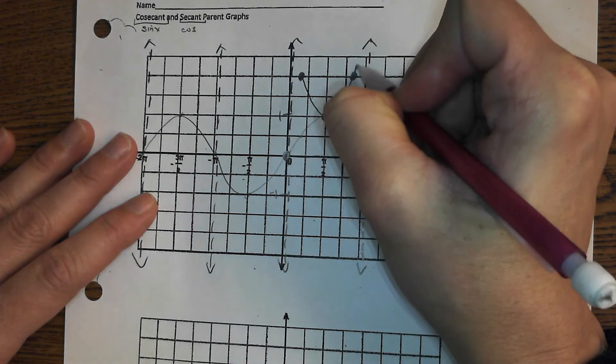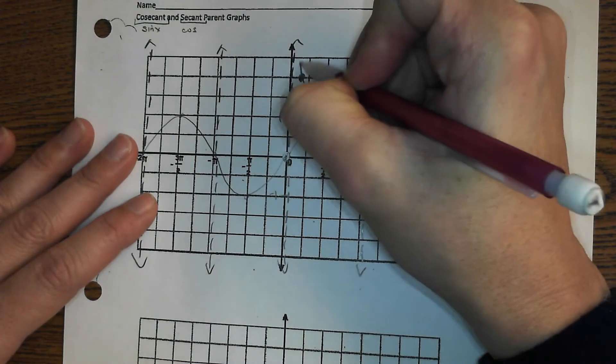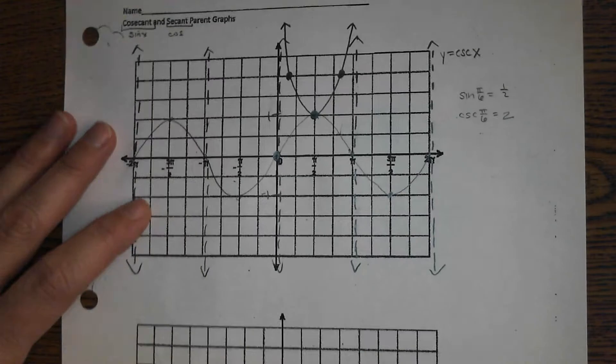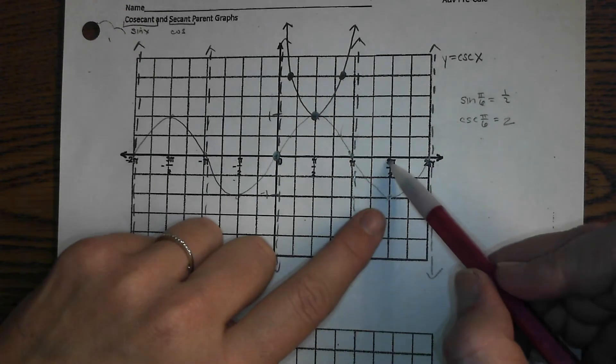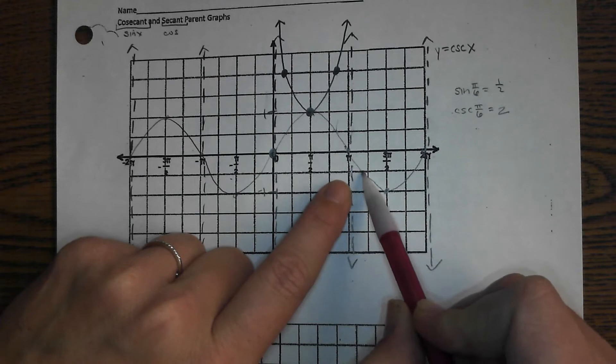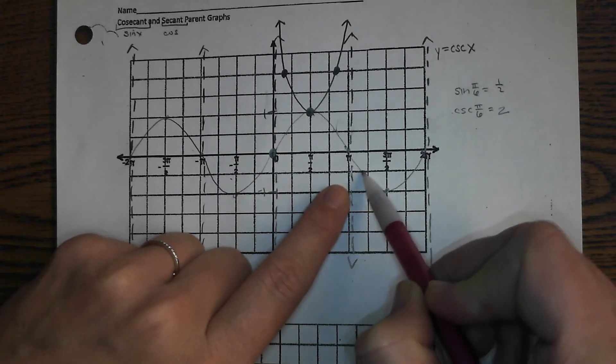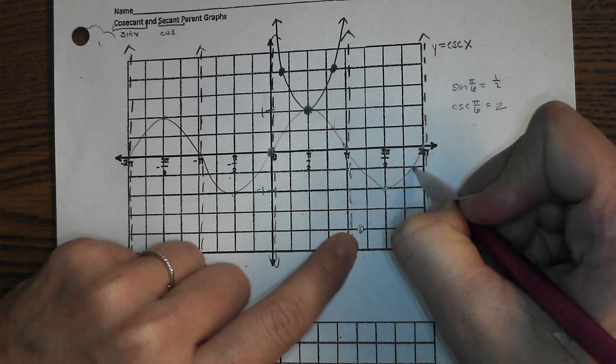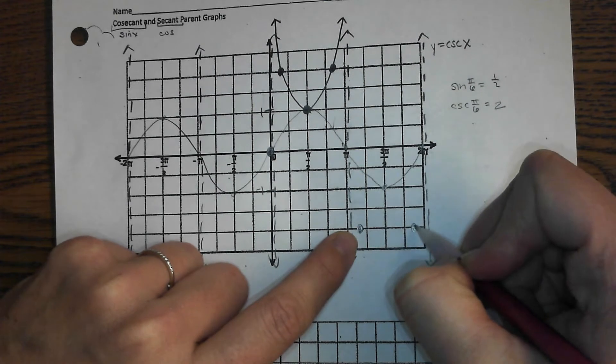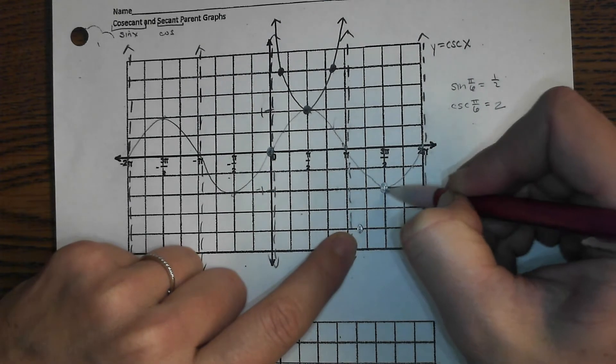As we know, anytime you approach vertical asymptotes, your graph heads off towards one of the infinities. Over here, if you have negative one-half, the reciprocal of that is negative 2. Same thing here at negative one-half is negative 2. The reciprocal of negative 1 is still negative 1.